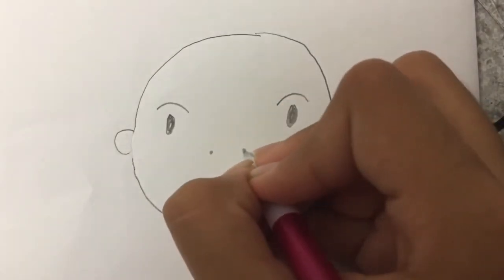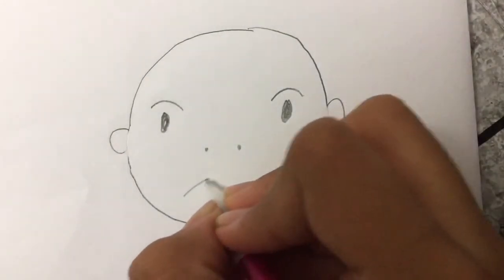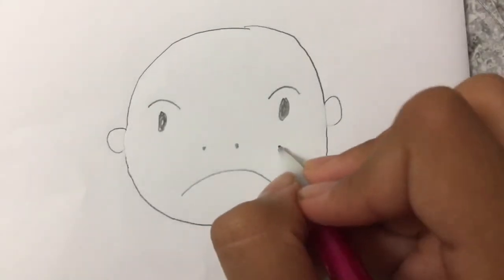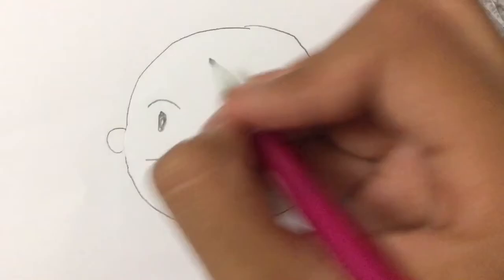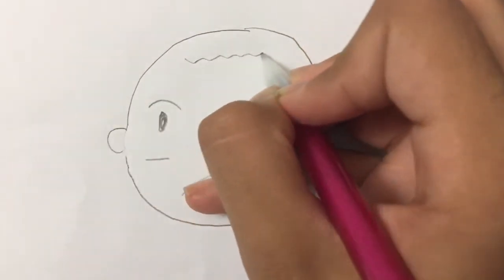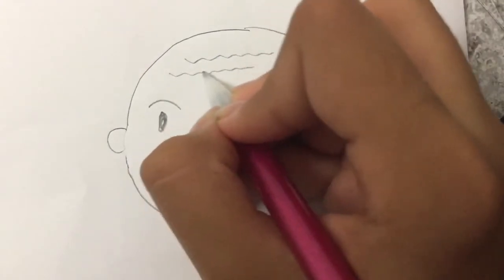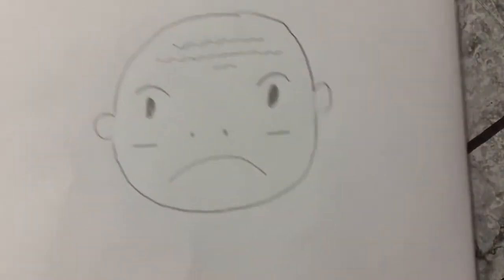And then he's not really happy, so we're gonna draw an angry face. Draw two lines like this, and then squiggly lines on his head. And there, okay, now...